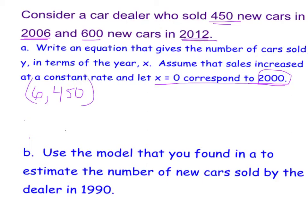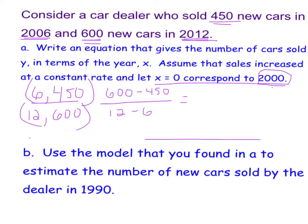And 2012, if 2000 is 0, 2012 is 12, and there were 600 cars sold. And from here, it's exactly like the last example. You'd have to find your slope, and then take one of the points, substitute it in for x and y to get your y-intercept, and then write it in slope-intercept form.